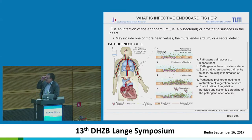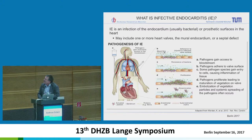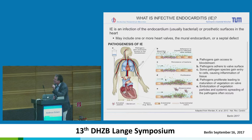So if an infective endocarditis comes to practice, the pathogens have to gain access to the bloodstream. Also, there has to be a defect in the endothelium. Some pathogen species gain entry to cells causing inflammation of tissue and pathogens proliferate, leading to maturation and vegetations forming.